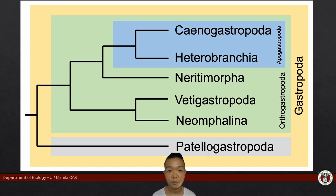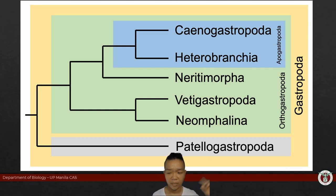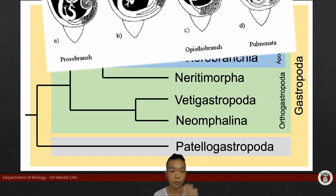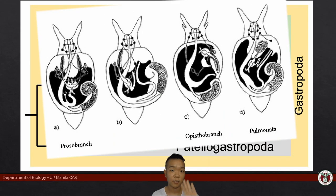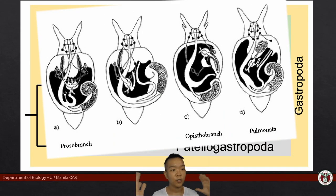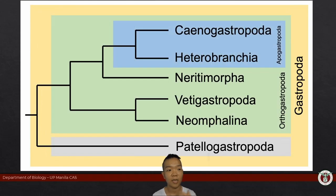Currently, this is how gastropods are broken up into their main clades. It started out based on the position of their gills. You may have heard of the groups prosobranch, opisthobranch, and pulmonate — that's the older classification. With science, many studies come up and things change.